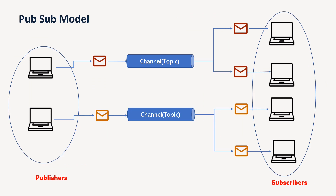In the pub-sub model, there are three main components. Here we have publishers — publishers are those systems or applications that are going to put messages, but they are not concerned about who is going to consume them. Whatever messages or output they want to send, it will be sent to a channel or topic. Channels or topics are basically a kind of message queue, and whatever messages there are, they are pushed by publishers into a topic.